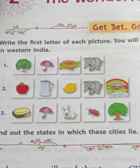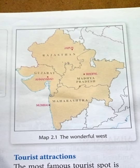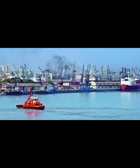Next we can look at Mumbai. It is a city in western India and the capital of Maharashtra. The old name of Mumbai was Bombay. This city is situated on the west coast of India, and it faces the Arabian Sea.